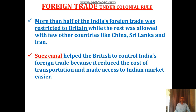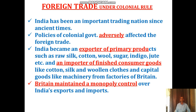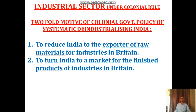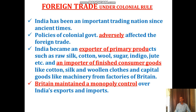So under the colonial period, India became the exporter of primary products and importer of finished consumer goods. For our exports, we were not paid at all; for the imports of finished goods, because industries like 'made in India' were not there, we had to import finished goods from Britain and pay high prices. So they exploited in two ways — that is what we call the twofold motive: to reduce India to an exporter of raw material, and to turn India into a market for finished products from Britain.